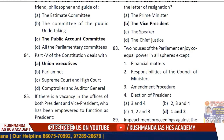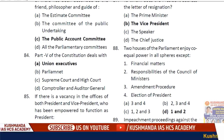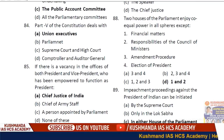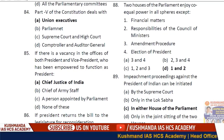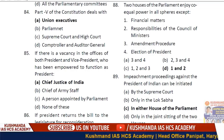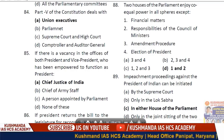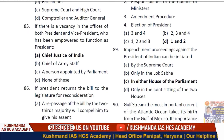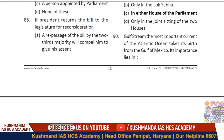Question 88: The two Houses of Parliament enjoy co-equal powers in all spheres except option D — financial matters and responsibility of the Council of Ministers. Question 89: Impeachment proceedings against the President of India can be initiated in either House of Parliament — this is true.